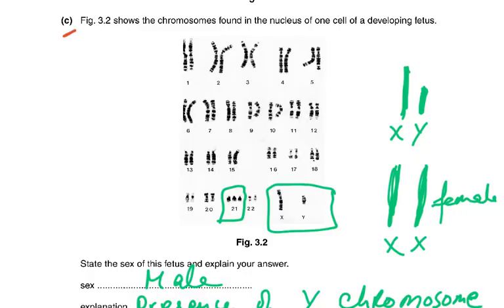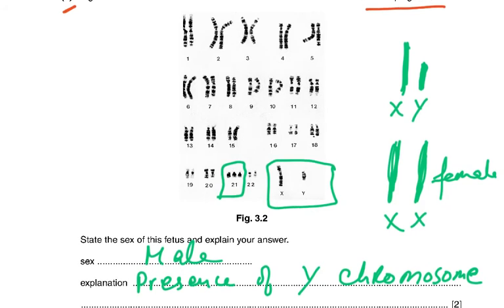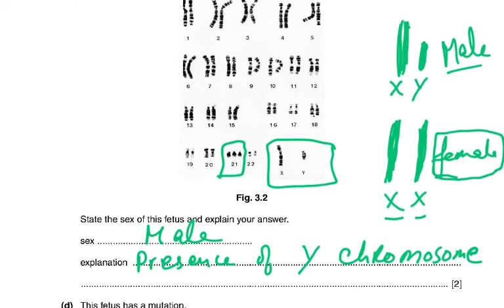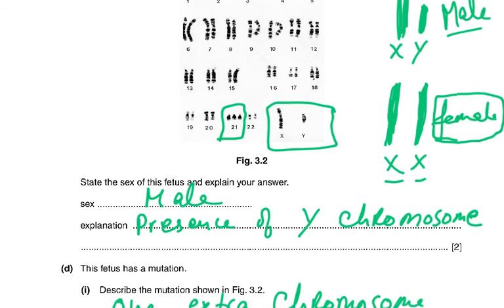Figure 3.2 shows the chromosomes in the nucleus of one cell of a developing fetus. The 22 pairs are body chromosomes, but the 23rd pair decides the gender. If one chromosome is longer and one shorter, we call it X and Y — the shorter one is Y. If both are the same length and shape, it is XX and the child is female. XY is male — all men and boys have XY in every cell of their body. State the sex of the fetus: it is male, because it contains the Y chromosome.